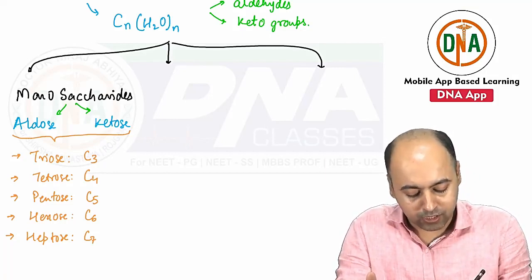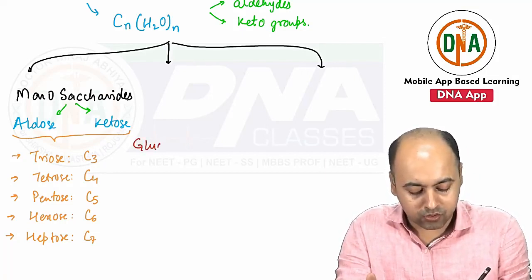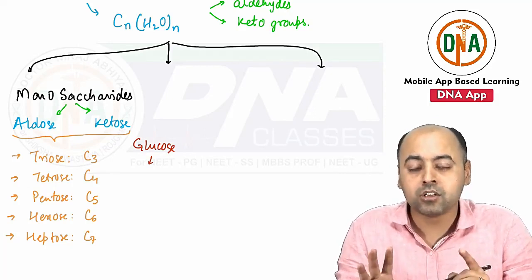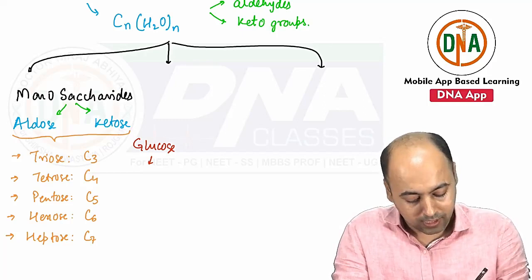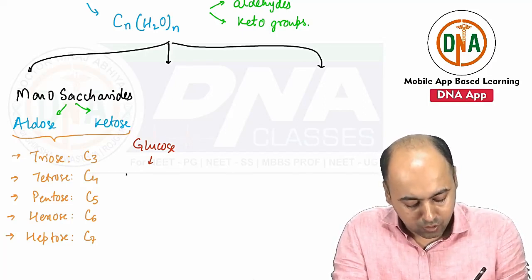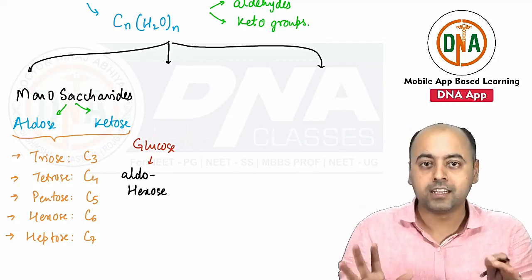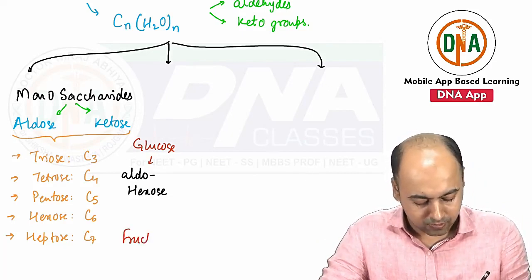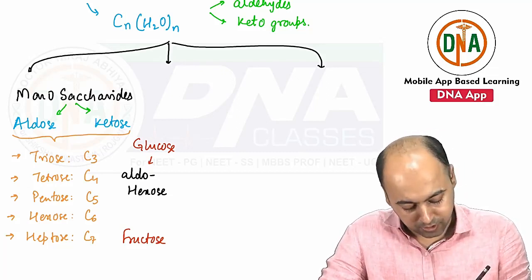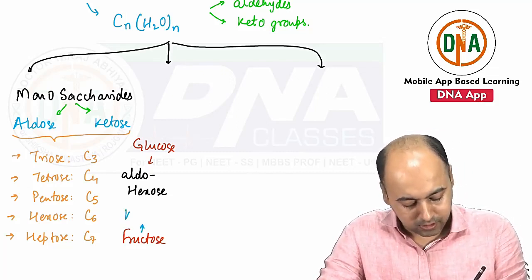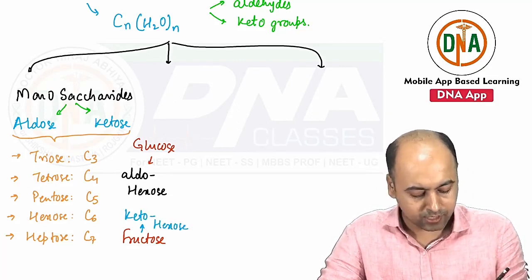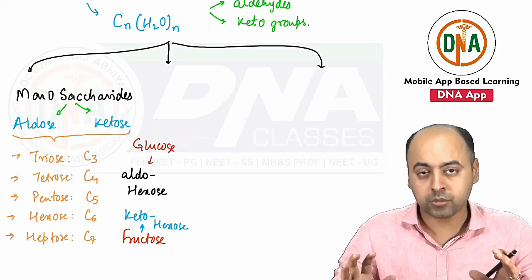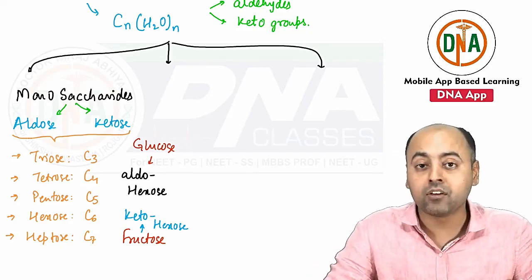For example, how do we describe glucose? Glucose has aldehyde as its functional group, so it is an aldose. It has six carbons, so it is a hexose. Therefore, we call glucose an aldohexose. Similarly, fructose would be a keto hexose — its functional group is the keto group and it also has six carbons. This is how we describe monosaccharides.